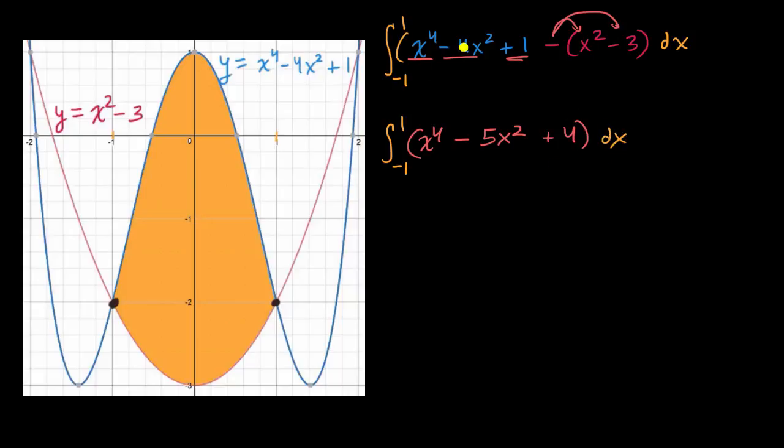And just to be clear, I should put parentheses right over there. Because the dx is being multiplied by this entire expression. Let's find the antiderivative of this. This should be pretty straightforward. We're just going to use the reverse power rule multiple times. So the antiderivative of x to the fourth is x to the fifth over five. We just incremented the exponent and divided by that incremented exponent. Minus, same idea here, five x to the third over three plus four x.